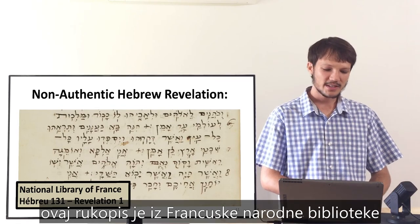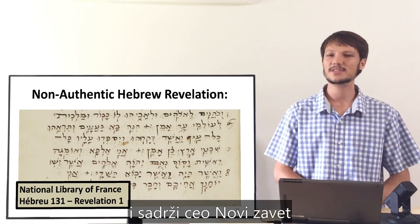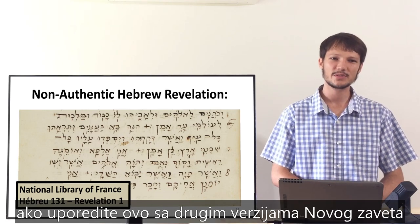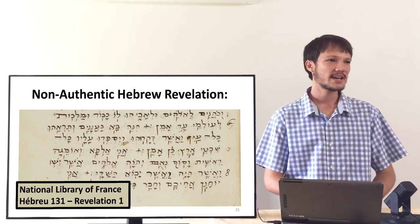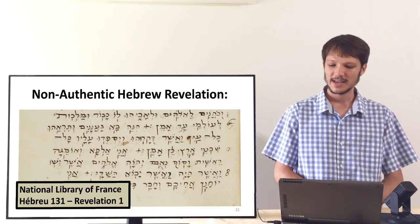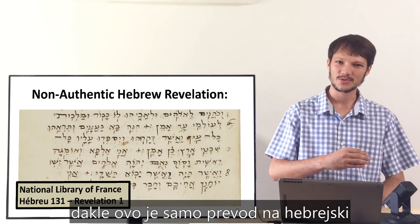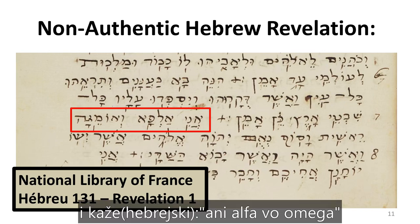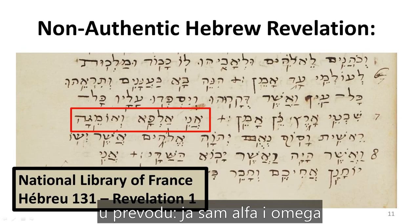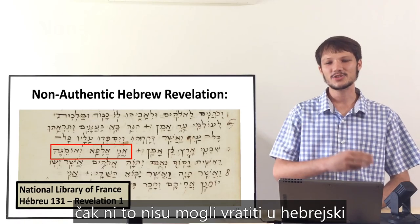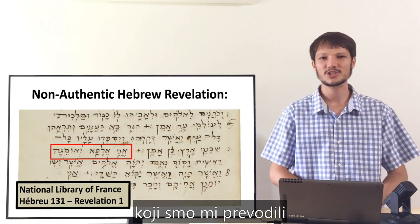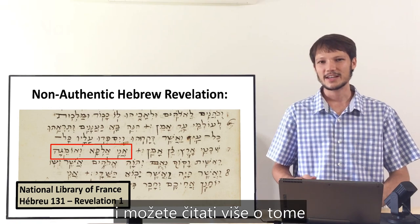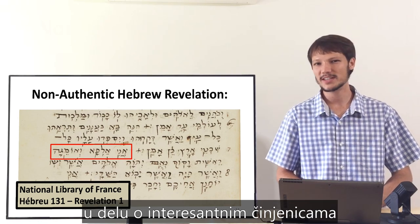Here's another example: this manuscript from the National Library of France contains the whole New Testament in Hebrew. However, comparing it with other versions shows it's basically the same as the Greek and/or Latin versions — just a poor translation back to Hebrew. For instance, in Revelation chapter 1 it says 'I am Alpha and Omega' — they couldn't even get that back into Hebrew. Something very interesting is that the Hebrew Revelation we've been translating never uses Alpha and Omega even once.